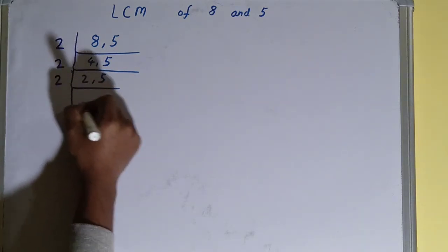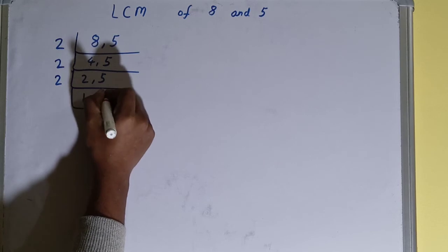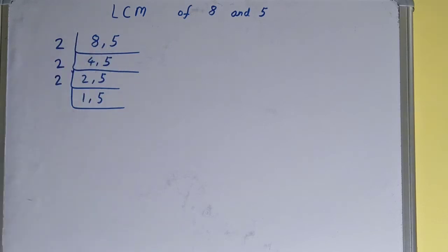Again we'll check if any of the number is divisible by 2. None of the numbers is divisible by 2, so we'll go to the next prime number, that is 3. Is any of the number divisible by 3? None of the numbers.